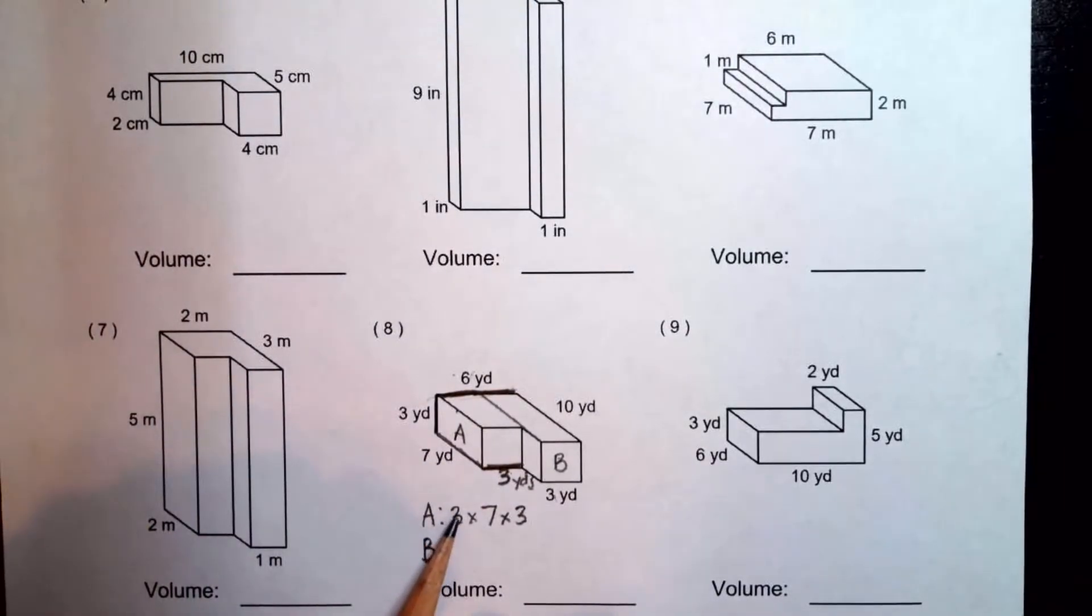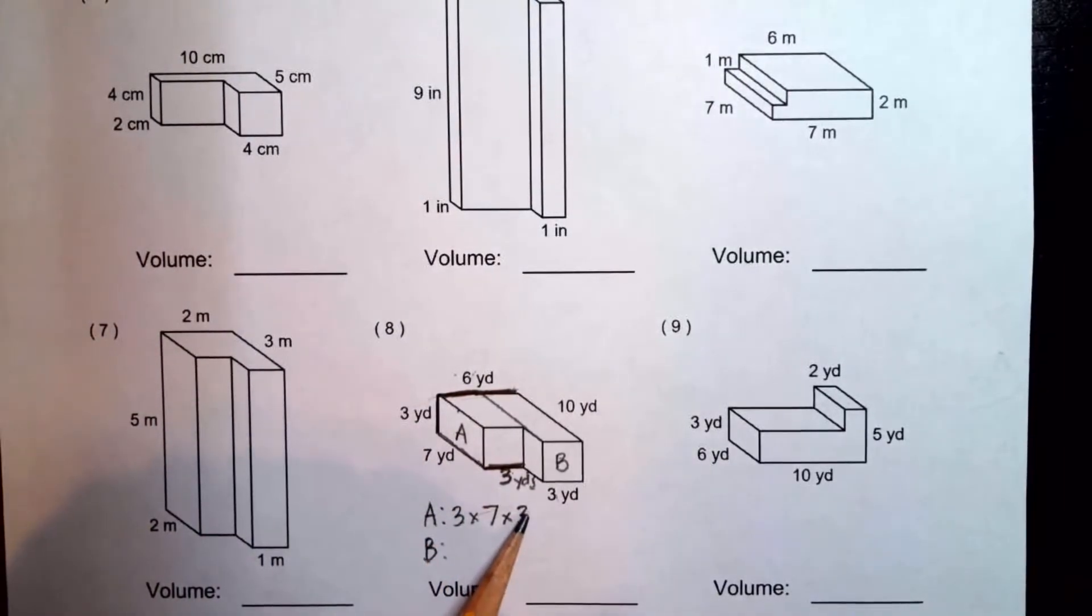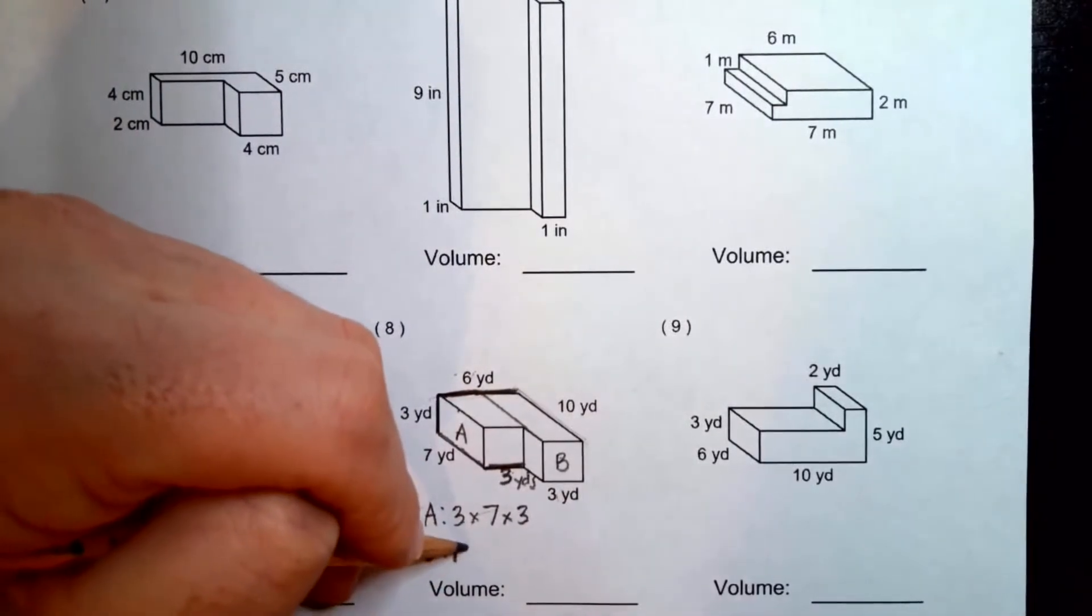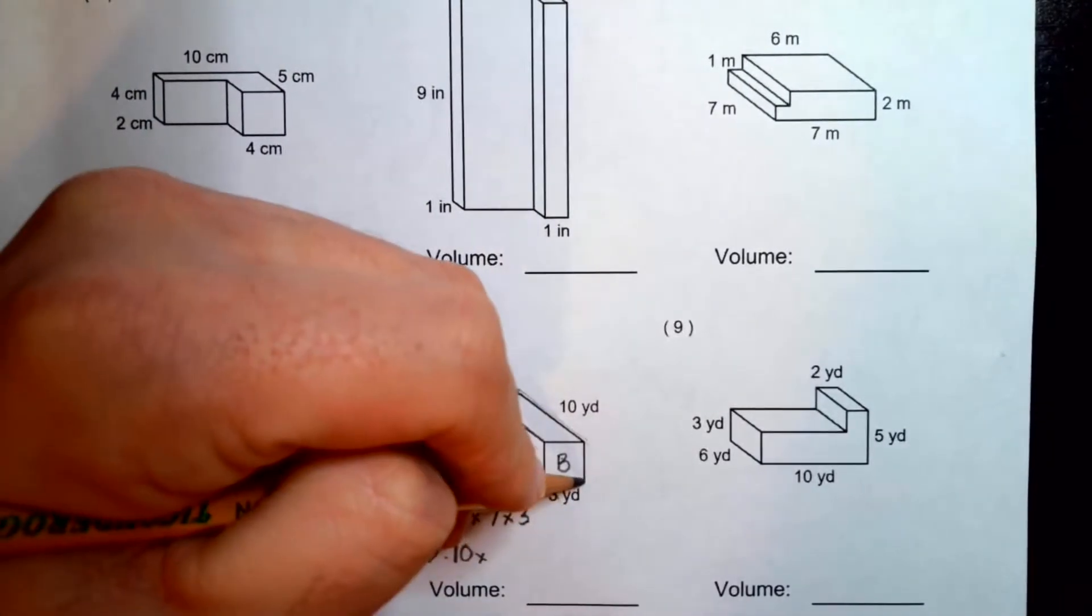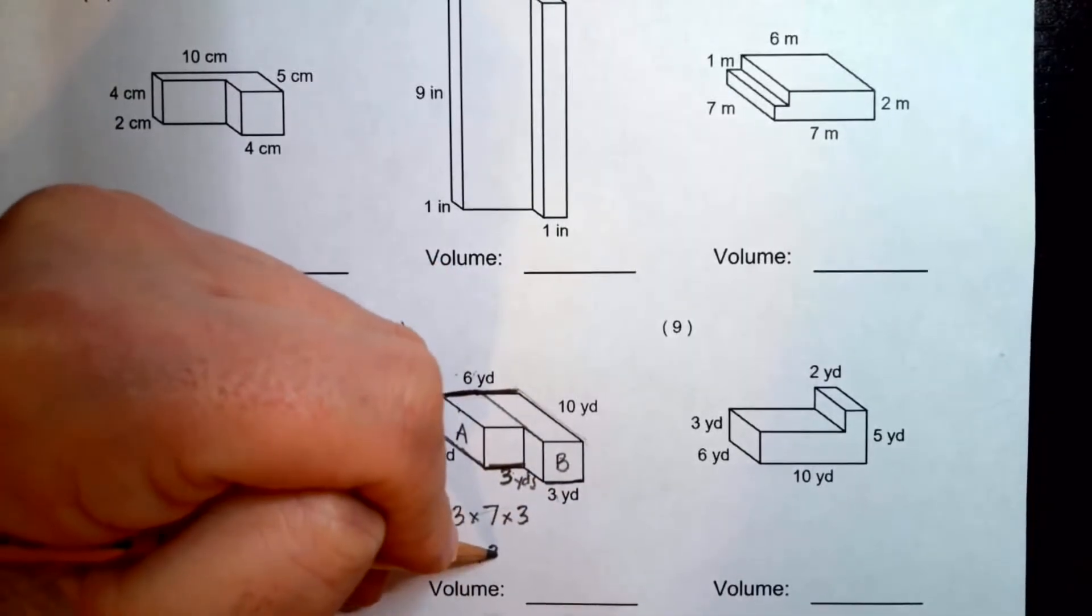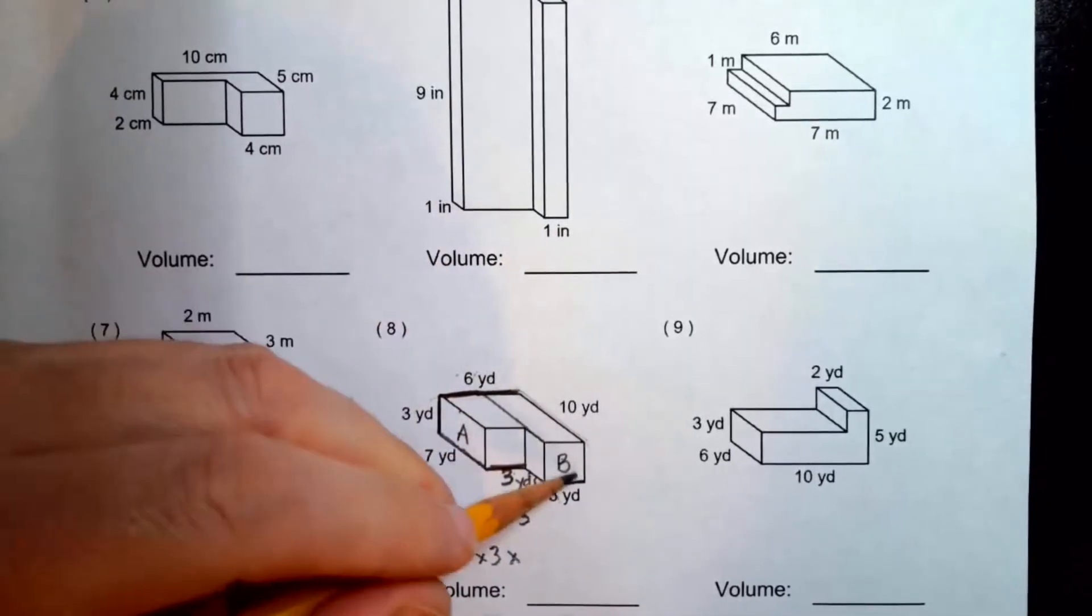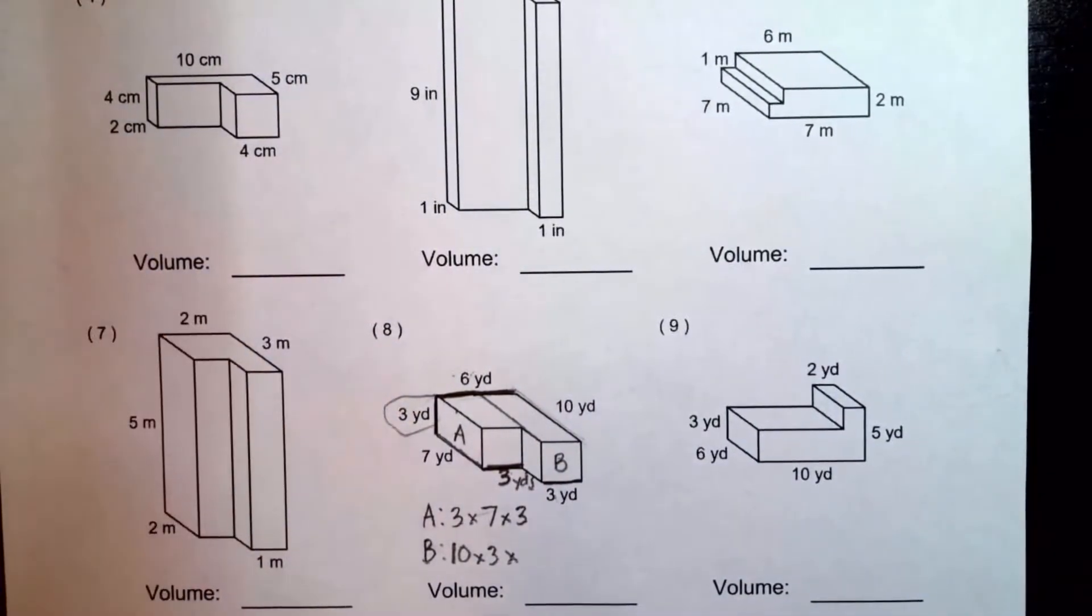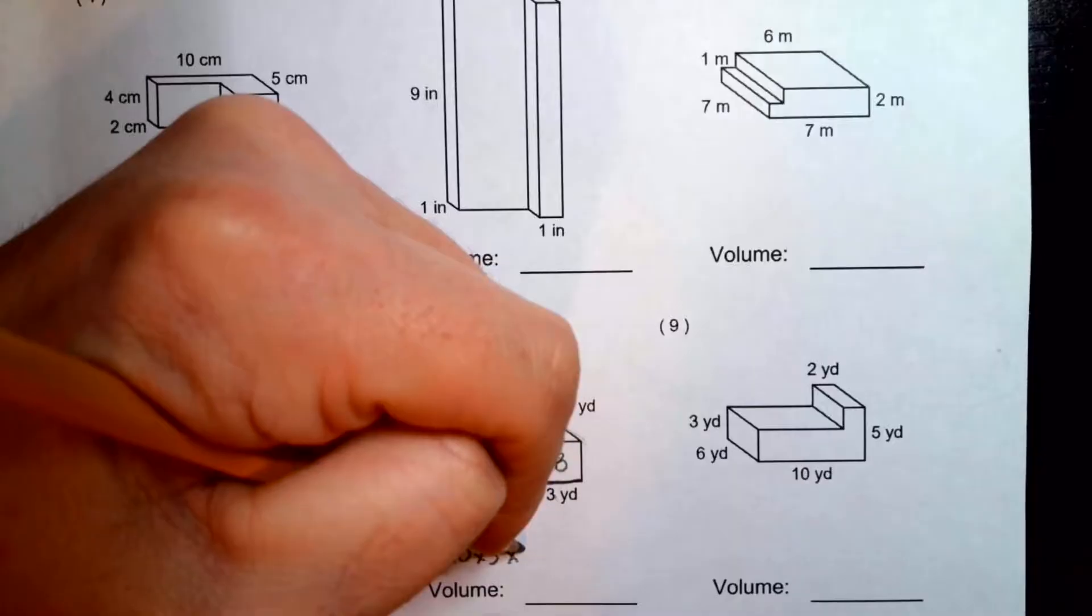There is our expression to find the volume for A, and then let's go ahead and get the one for B. We know that the longest side of B is 10. We know that the width is three, and then both prisms have the same height, and there's our height measurement right over here. That's our height. So, that is also three.